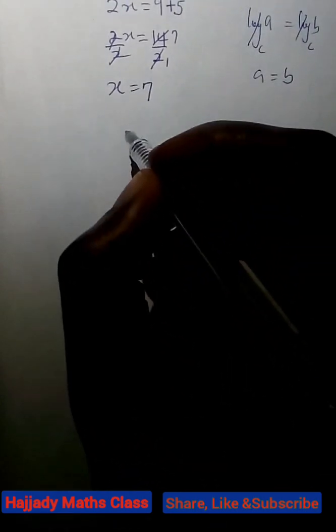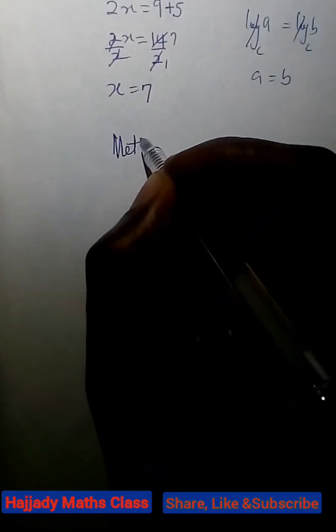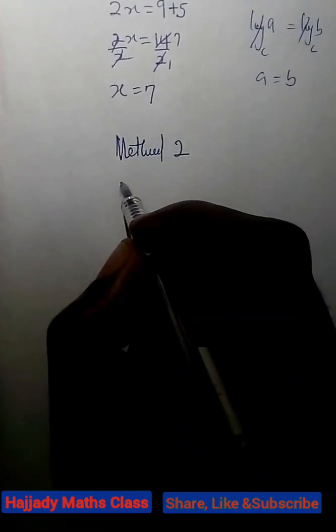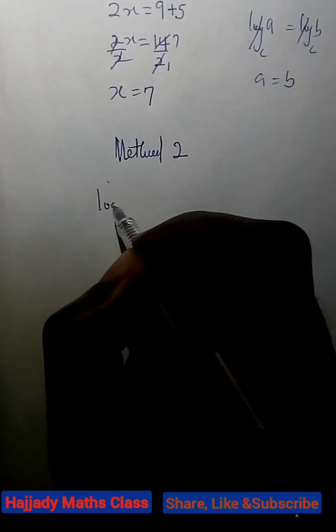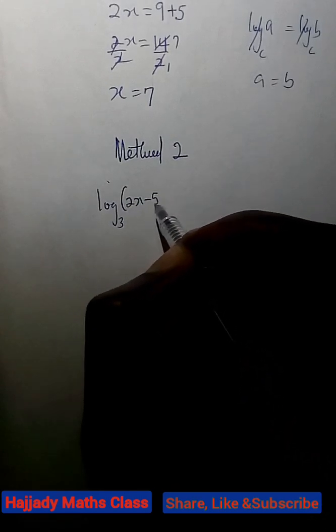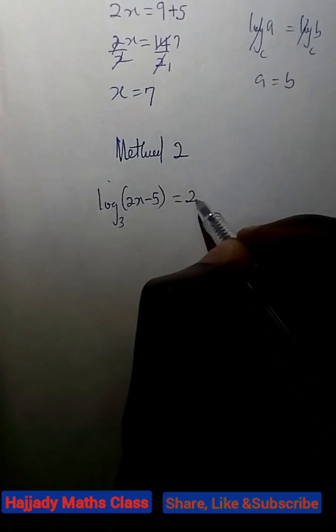Now, going further to method 2. Going further to method 2, we have, from the question log base 3 of 2x minus 5 equals 2.